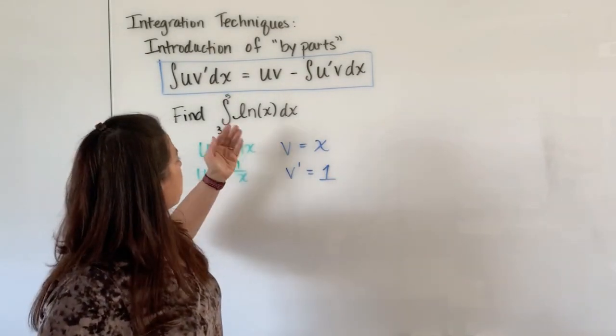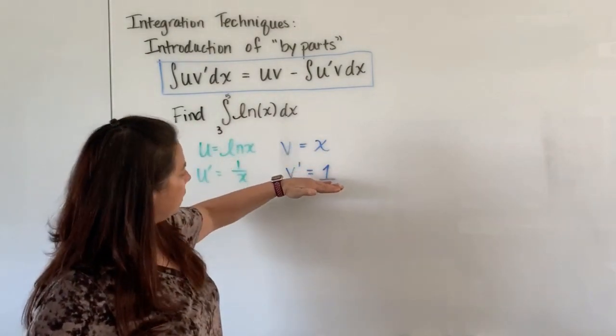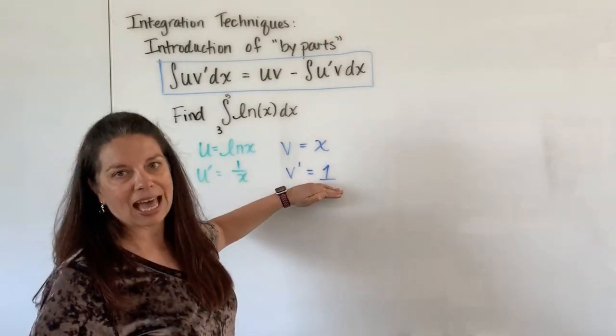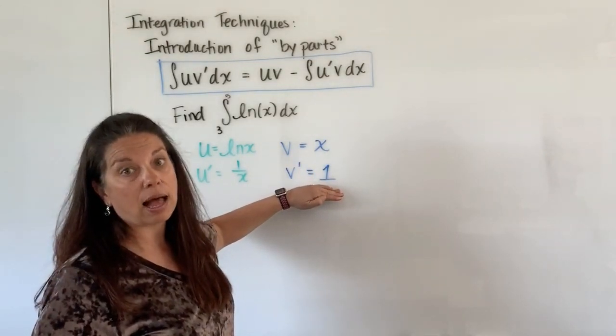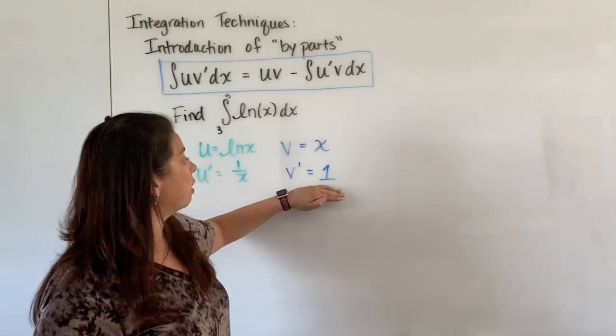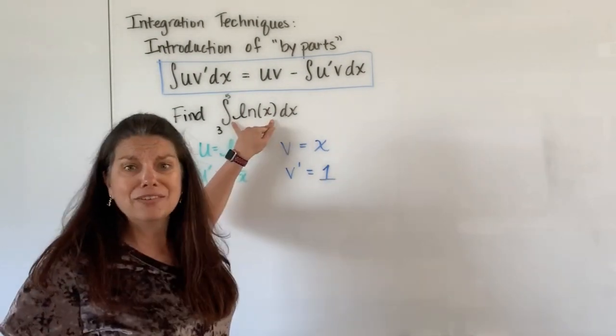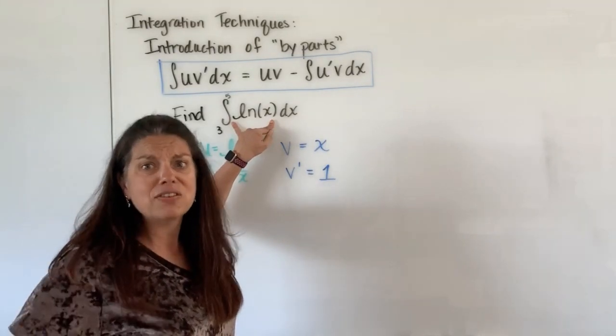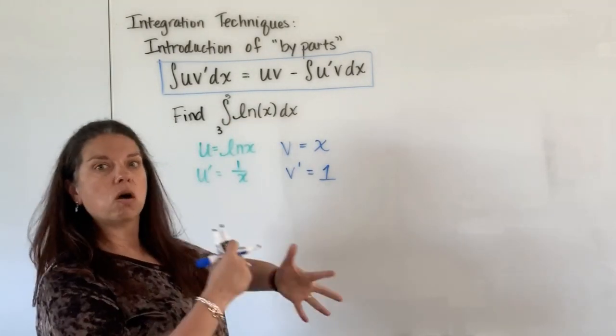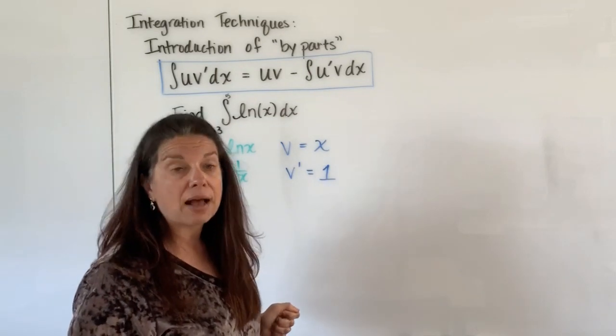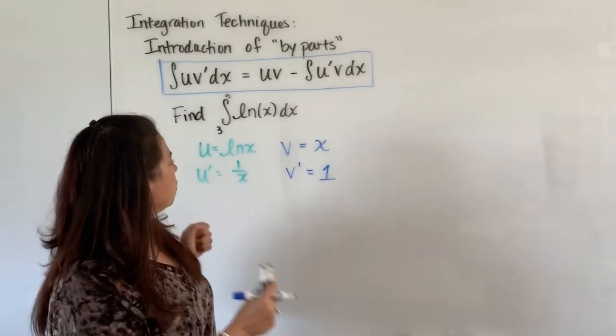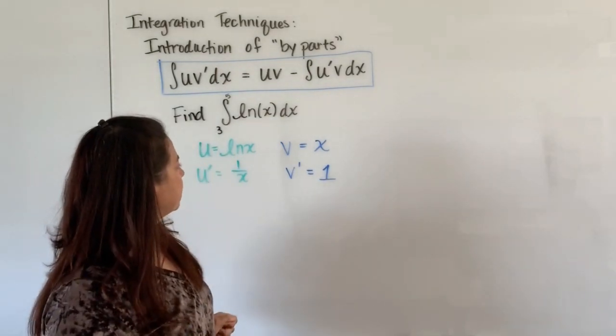The other thing is then that would have made our v prime be natural log x and now you have to think, well how do you find the integral of natural log x? Oh wait, that's exactly what we're trying to find here in the beginning, the integral of natural log x. So those are some indicators that maybe I could switch things around and be a little clever in how I was organizing them.